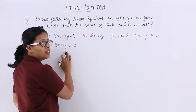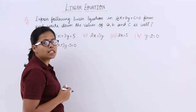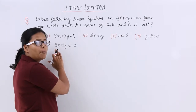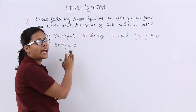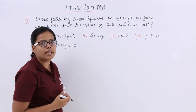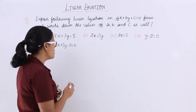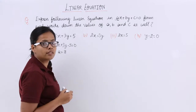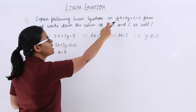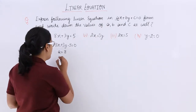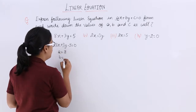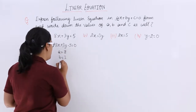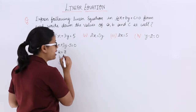You can see here this form is very much similar to ax plus by plus c equal to 0. Now you have to compare the coefficient of x and y with the coefficients in the above equation. So a is equal to 8 — the coefficient of x. Coefficient of y is b, so the value for b is 3, and the value for c is minus 5.